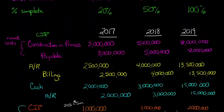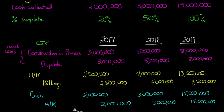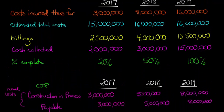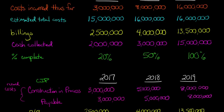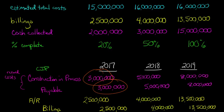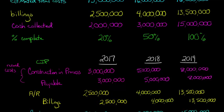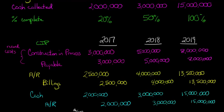A lot of our journal entries are actually going to be exactly the same as they would be under the percentage of completion method. For example, we record costs to the construction in process (CIP) account — an asset that's debited — and we credit some kind of payable or cash. In 2017, if we incur $3 million in costs, we debit CIP for $3 million and credit the payable for $3 million. For billings, if we bill the customer $2.5 million in 2017, we debit accounts receivable for $2.5 million and credit billings for $2.5 million. For cash collected — $2 million in 2017 — we debit cash for $2 million and credit receivable for $2 million.